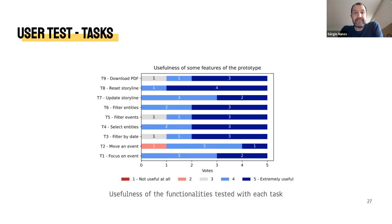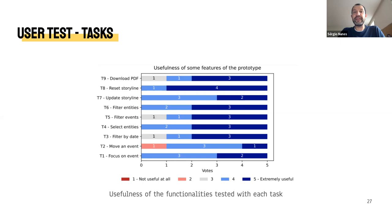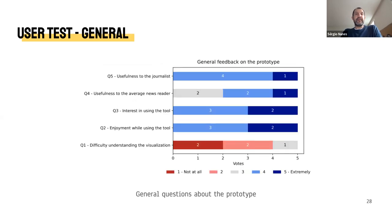In the expert user tests, the features that obtained the best ratings were related to resetting the storyline and the selection of entities. The comments made during the exploration section corroborate these ratings. On the other hand, moving an event received the most negative ratings, possibly because participants did not find a clear use for this functionality for that particular story. The last set of quantitative questions allowed us to conclude that journalists in general liked the application and found the visual metaphor easy to understand. Regarding usefulness for the general reader versus the journalist, participants gave a higher mark to use by professionals due to the complexity of the interface.